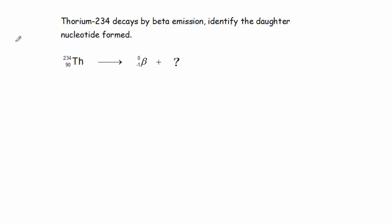Here's a problem. Thorium-234 decays by beta emission. Identify the daughter nucleotide formed. Every chemical and nuclear equation must be balanced, and we just described how a nuclear equation must be balanced. So, let's examine this equation.